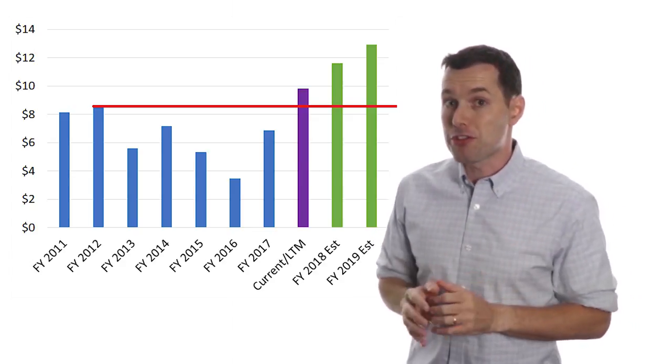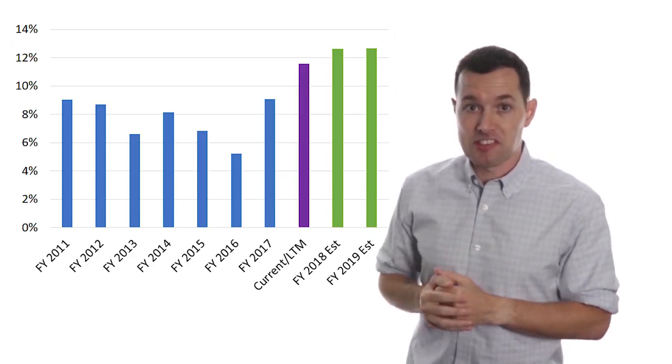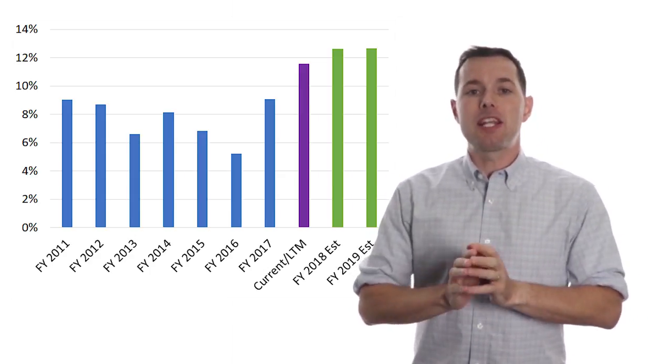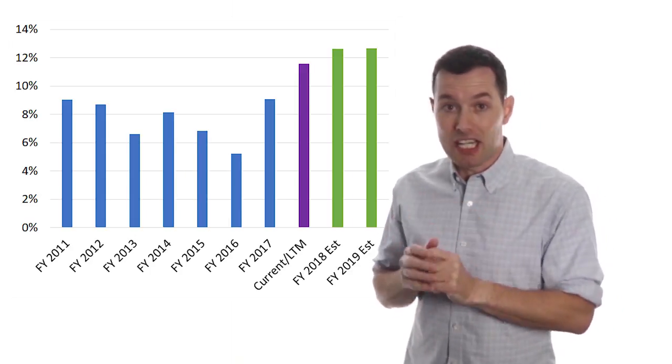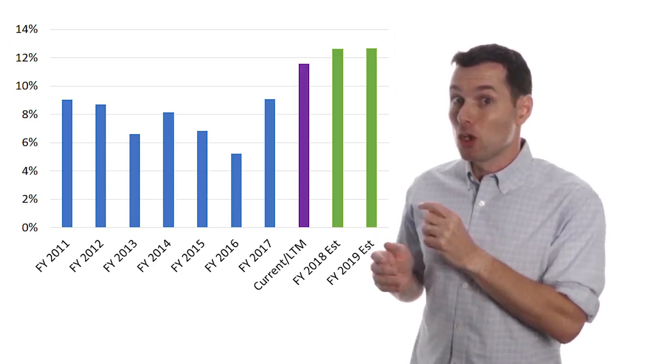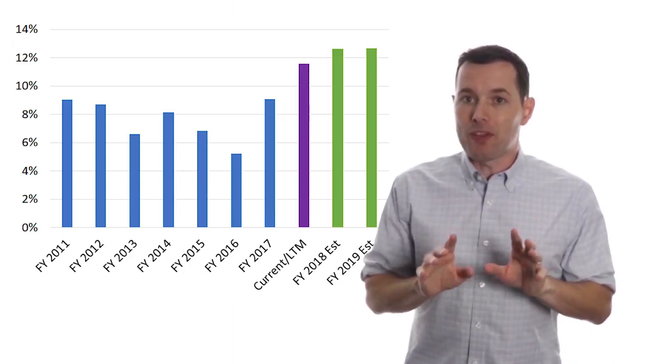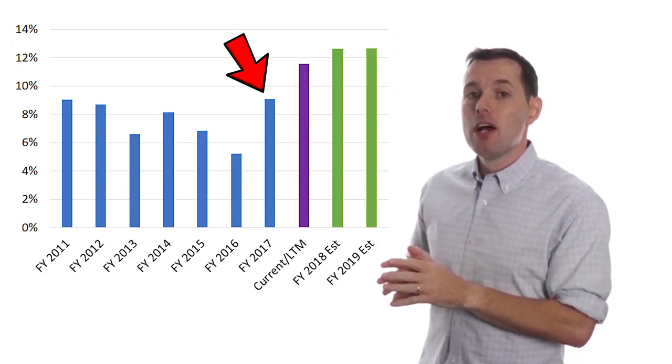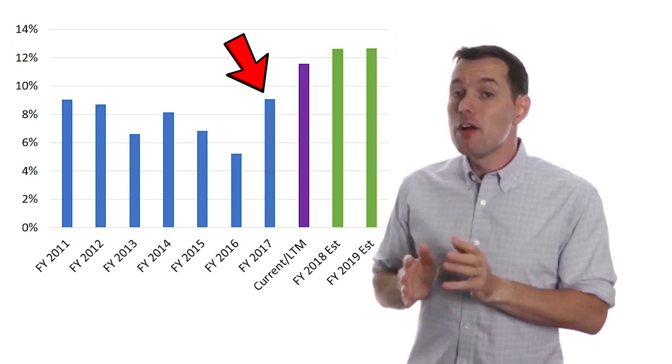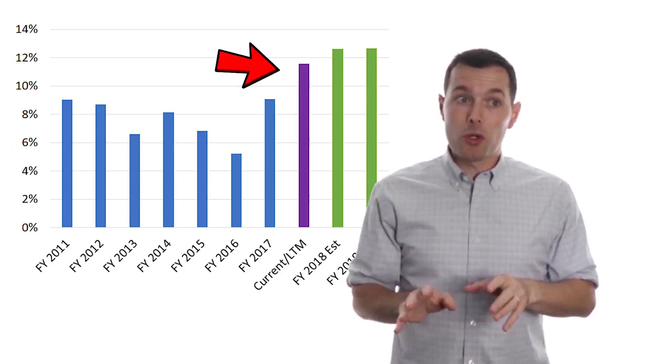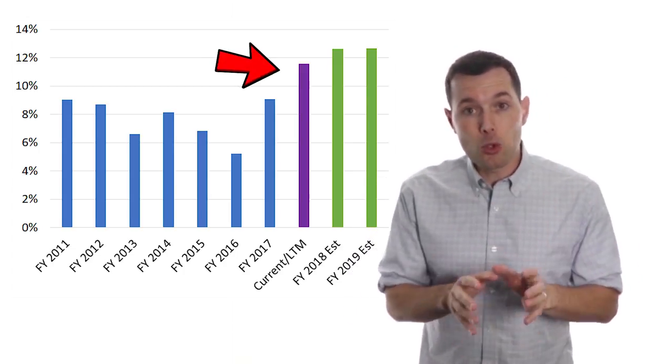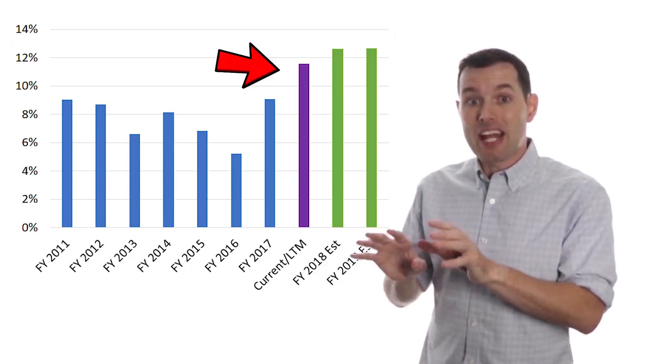Now what makes this even more interesting is this chart here. This is net income margins. Once again, 2016 was a bad year from many perspectives, but since then Caterpillar is recovering nicely and net income margins look great. Now I will point one thing out: this last blue bar here is 2017. The purple bar, which is the last four quarters, includes two quarters from 2017 and the first two quarters of 2018. So that's real, that actually happened.